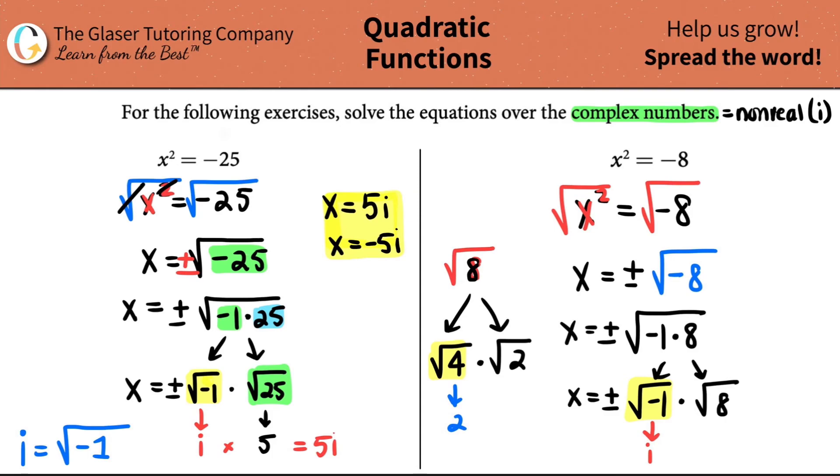So this part is two. And then this, you can't really do anything with it. The square root of two, you can't break that down even more unless you want the decimal answer, but they just come together. So this would be two rad two.